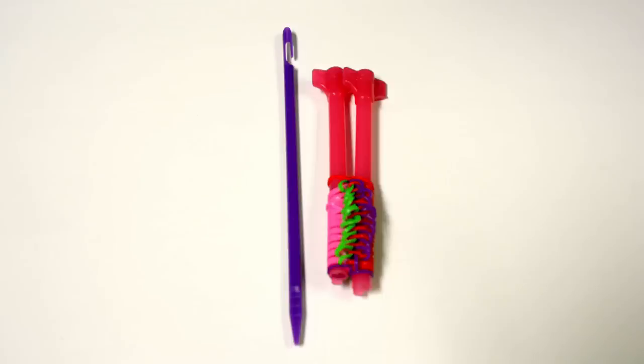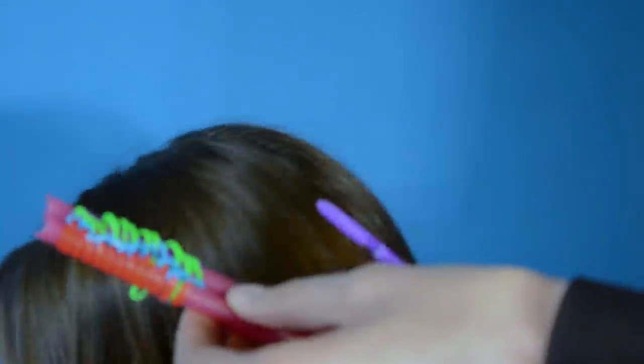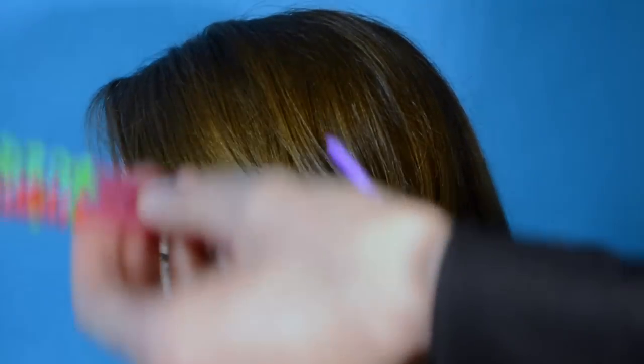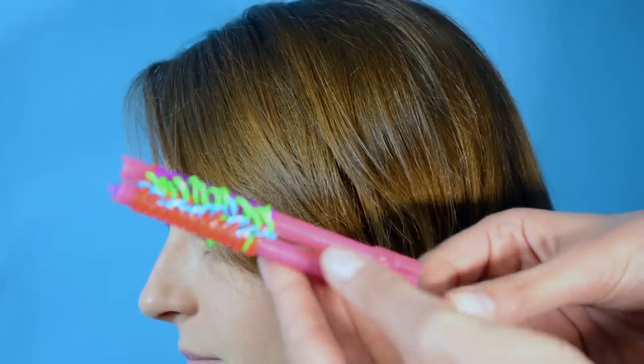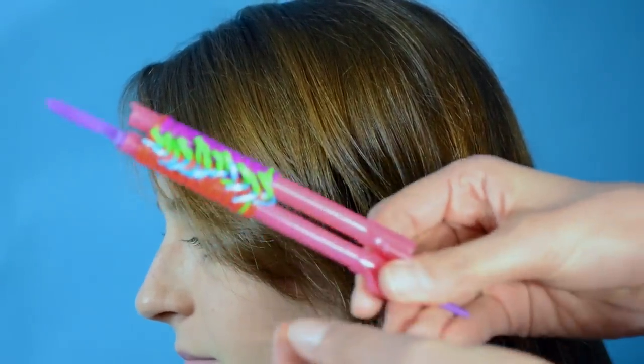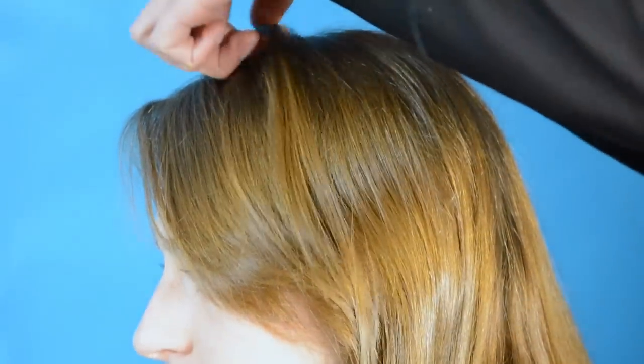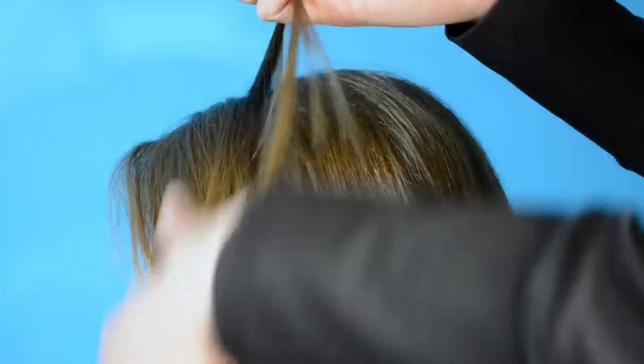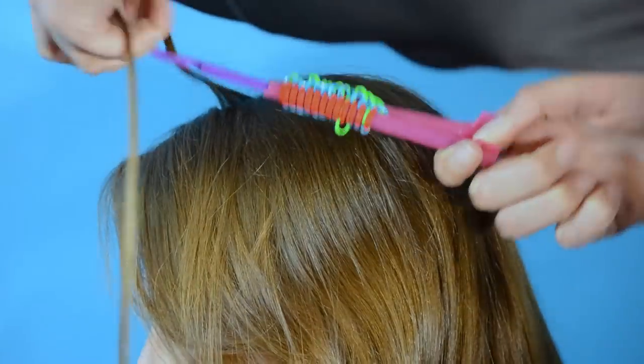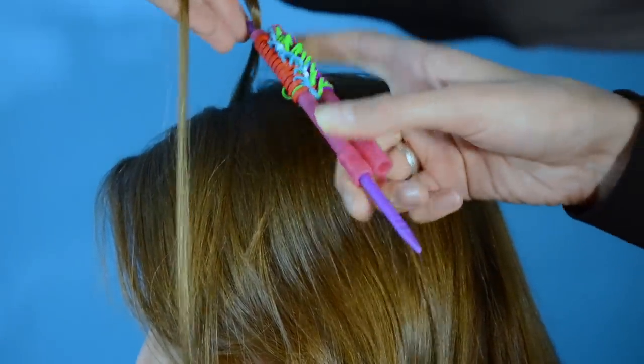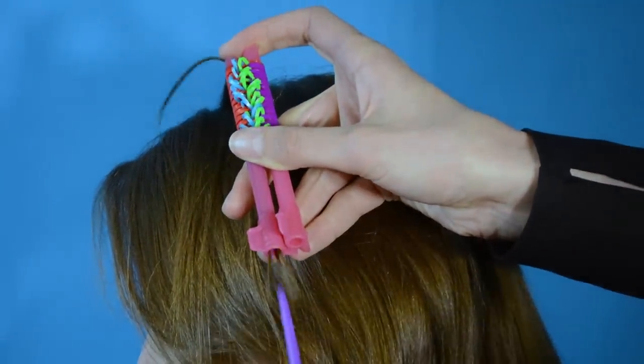For your next step, you will need your large guide tubes and your hair hook. You want to take your hair hook and your creation and stick the hair hook through the bottom of the guide tube. Then select a strand of hair, hook the hair, and pull it through the guide tube.